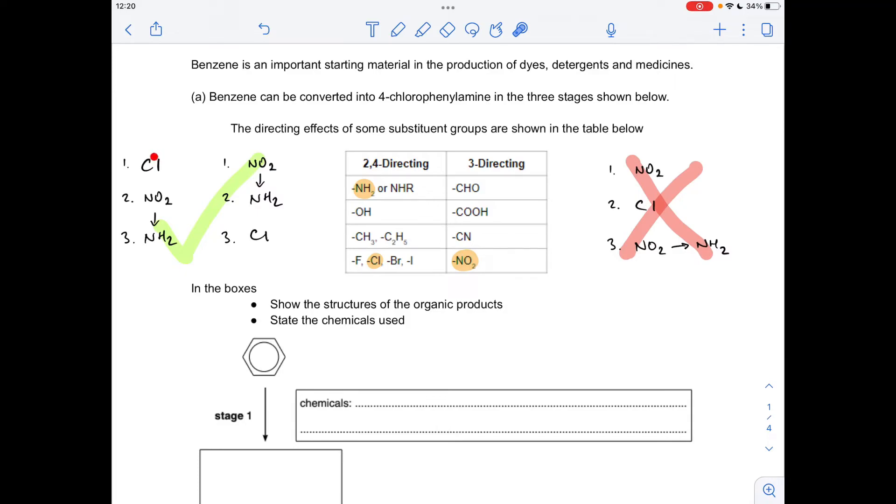So one way you could do it is you could put the chlorine on first. You'll see chlorine is a 2-4 directing group. We want to create 4-chlorophenyl amine. So if we put the chlorine on first and then put the nitro group on, that chlorine is going to direct the nitro group to position 4. You'll also get some of the 2-isomer as well but we want the 4-isomer so we can do it that way. And then once that nitro group's on, you can just reduce that to the amino group and that would give you the product.